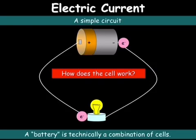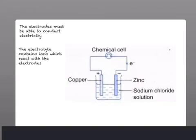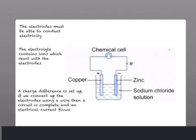The question we're interested in for chemistry is how the cell actually works. Here we have a drawing of a simple chemical cell. It is an electrochemical cell, exactly the same as we would see in electrolysis. An electrochemical cell is a system made up of two different electrodes that are in contact with the electrolyte. Both electrodes must be able to conduct electricity, so they are usually metals. The electrolyte is a liquid that contains ions which will react with the electrodes. The chemical reactions between the electrodes and the electrolyte set up a charge difference between the electrodes. This charge difference will then cause an electrical current to flow.